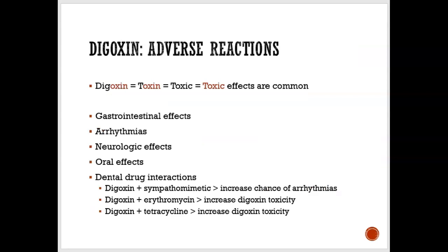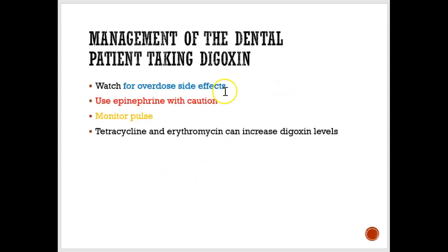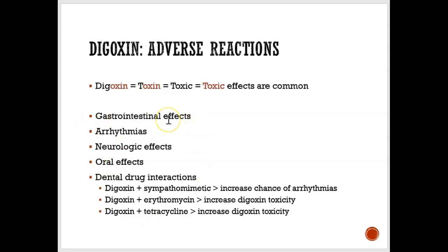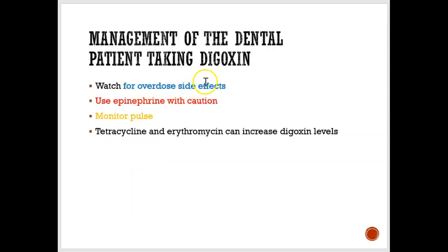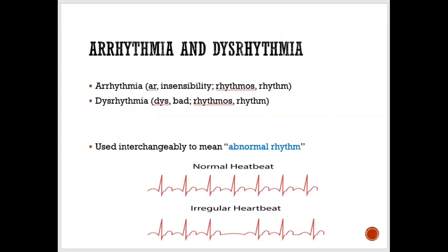Remember that digoxin is very toxic - there are many toxic side effects. A way to remember: the ending 'oxin' sounds like 'toxin.' If someone is taking digoxin, watch for overdose side effects including GI upset, vomiting, abnormal heart rate, and neurological effects. Because it's very toxic, if we're using epinephrine, make sure we use a very low dose. Always monitor blood pressure and pulse before treating any patient with heart conditions.